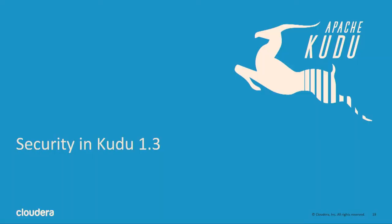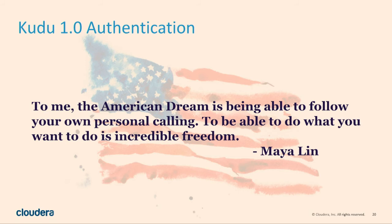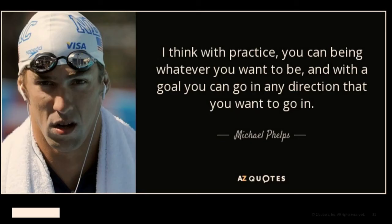Probably one of the most exciting features for enterprises is security. The original Kudu authentication is what we call the 'American dream security model' — you can do whatever you want, you can be whoever you want to be. That's not a great security model for a database. If I just come into Kudu and say 'I want to be the administrator, I'm going to delete everything,' Kudu would say, 'Yep, that's great. Go for it.' So we got rid of that model.